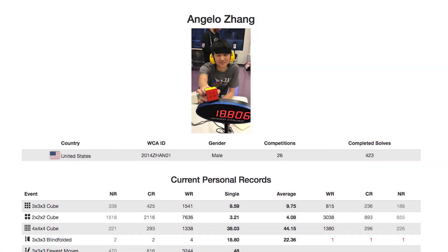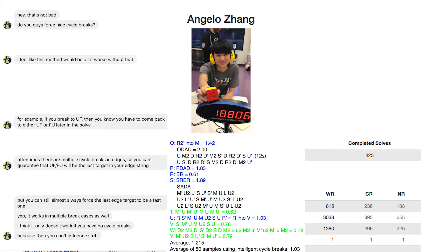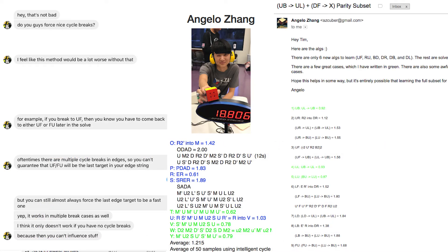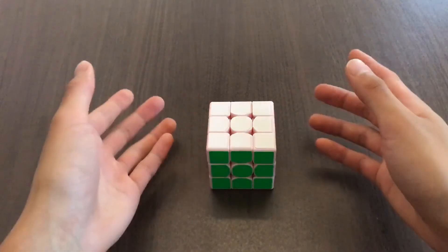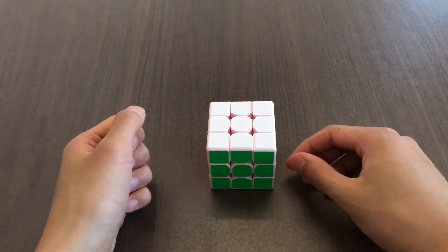I want to end by saying a huge thanks to Angelo Zhang. Angelo told me about this method and about how to cycle break intelligently. He also genned a lot of the algs. 2E2E definitely wouldn't be this good without Angelo's help, so again, huge thanks to him. That's it for 2E2E. Leave your comments and questions below and I will be sure to see them. Thanks for watching!